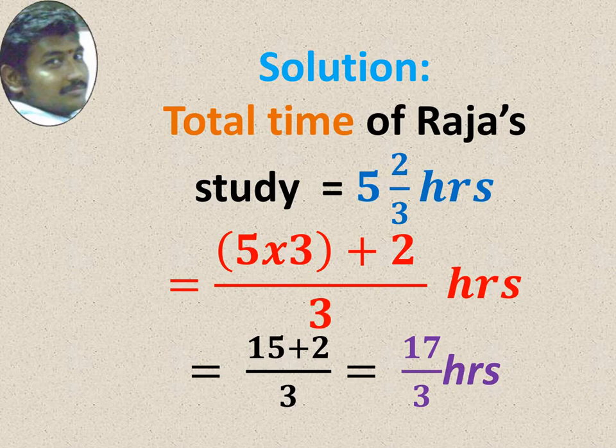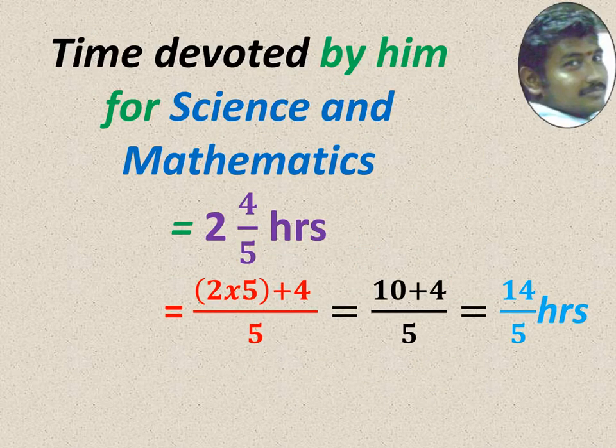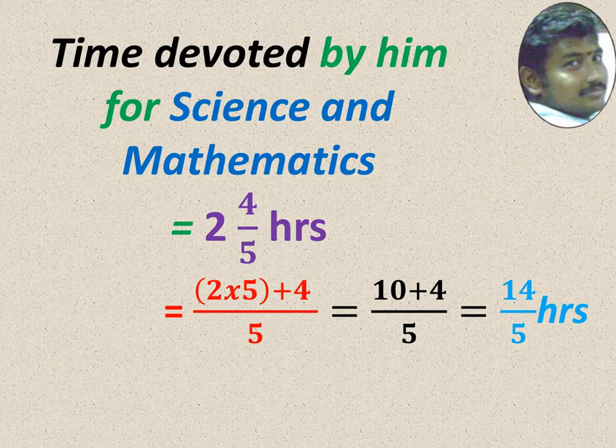To convert mixed to improper, multiply whole number and denominator. See, here 2 into 5. Whole number is 2, denominator is 5. 2 into 5 is 10. Then add the numerator 4. So 10 plus 4 is 14, 14 by 5. So 2 4 by 5 is equal to 14 by 5 hours.